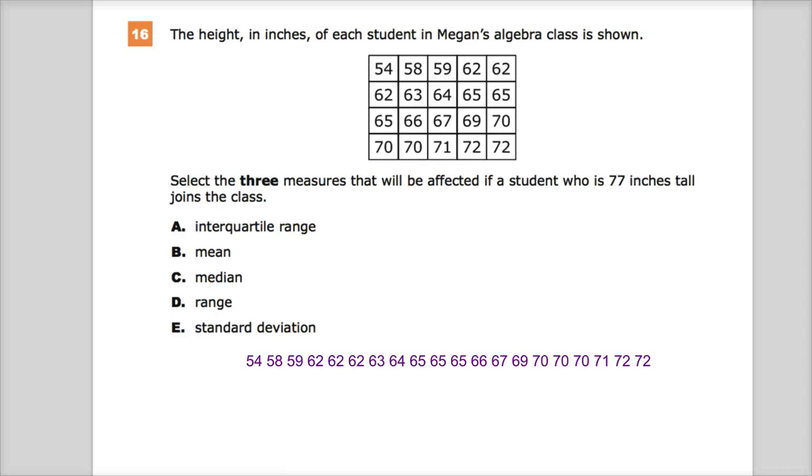This is the Integrated Math 1 practice test for 10 Ready in 2017-18, question 16. If you see this on a future test and it's not the same number, sorry, they use the same question over. The height in inches of each student in Megan's algebra class is shown. They were relatively nice about this, they put it in an order that's easy to work with because they've already ordered it for you. If numbers are not in order and you're going to find median or interquartile range or whatever, you need to put them in order before you do your analysis.